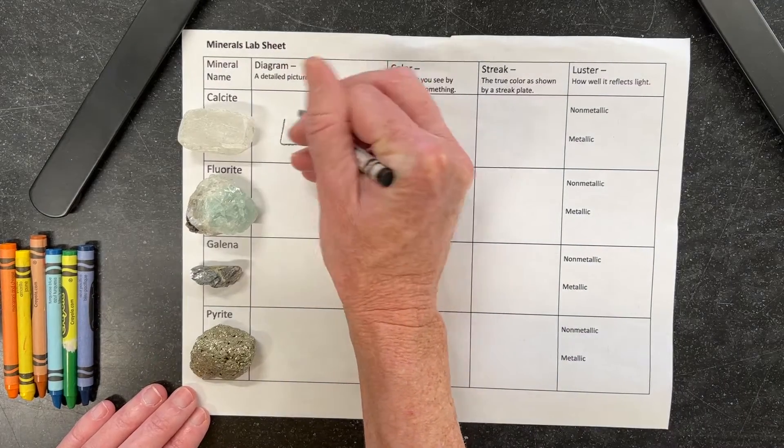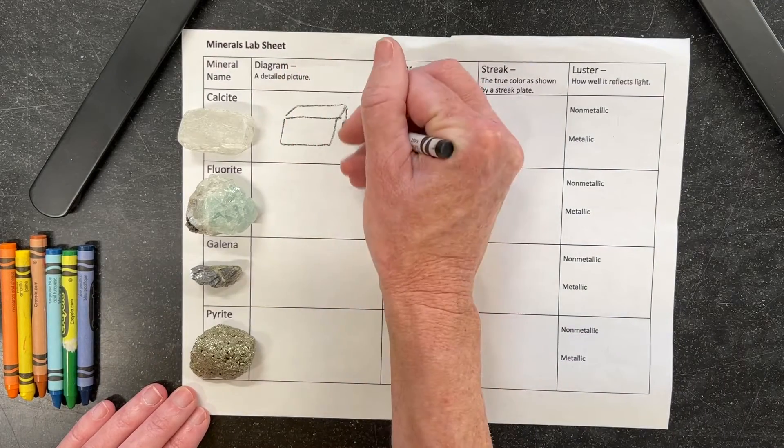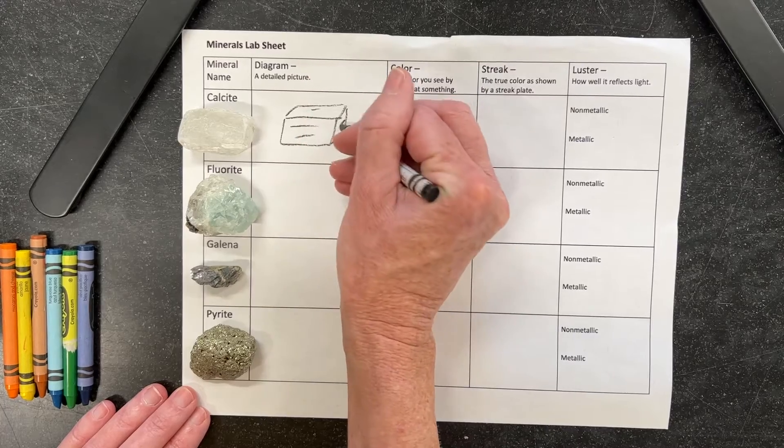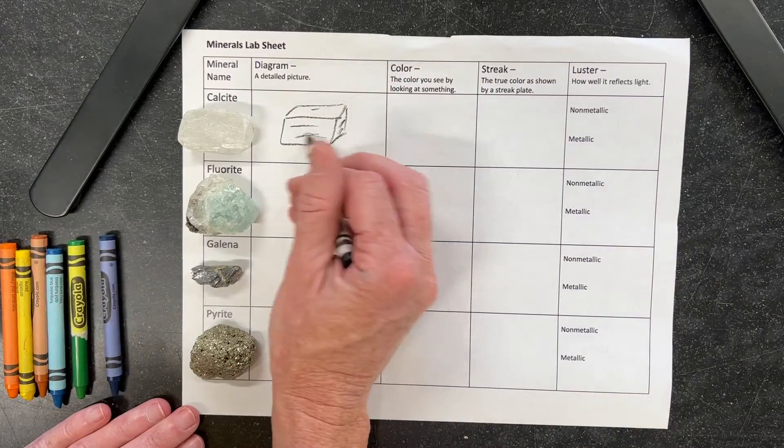I'm only using crayons or colored pencils. Since calcite is white, I'm just going to outline it in black. Maybe give it a little bit of shading.